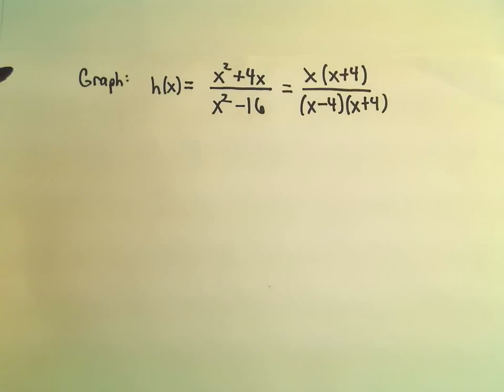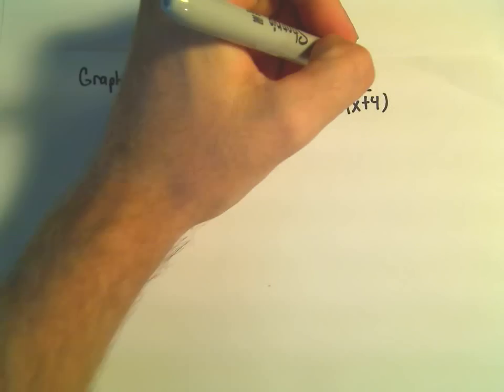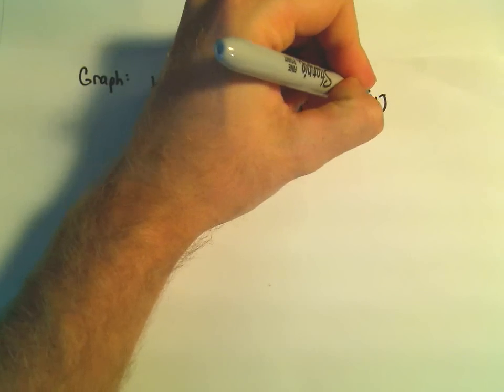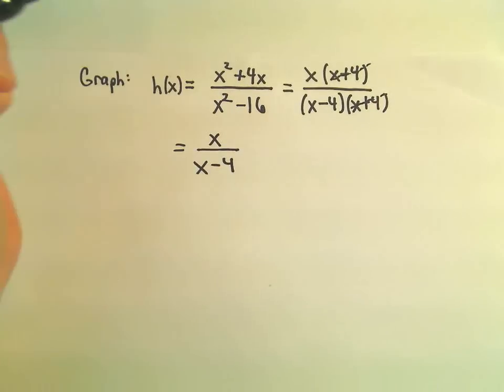So one thing that's kind of sticking out to me at this point is obviously we've got this x plus 4 and this x plus 4. So I'm going to cancel that out. And really I'm left with x over x minus 4.